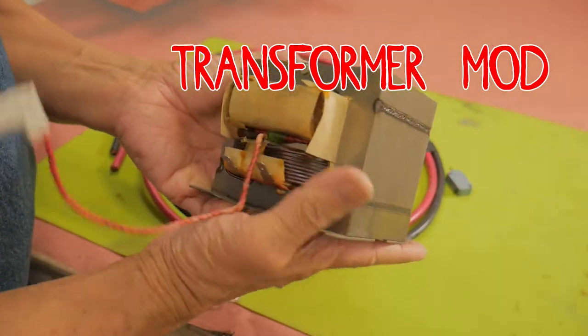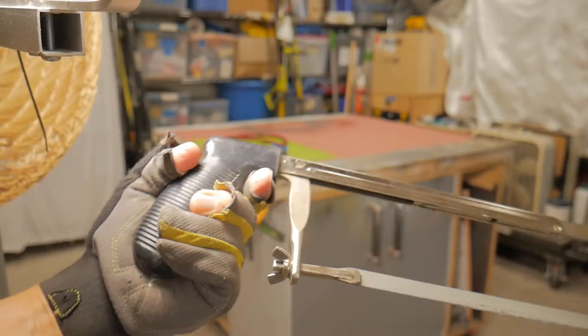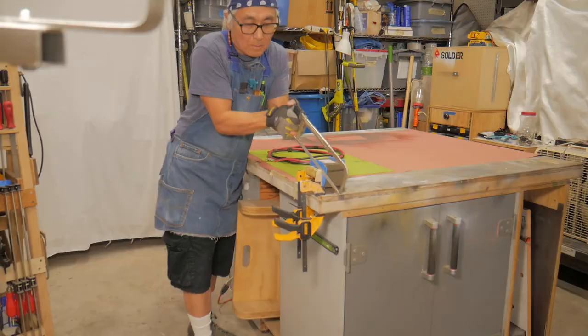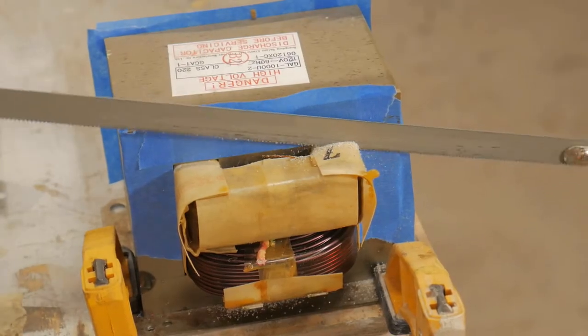This project was inspired by the late Grant Thompson, the king of random. Back in 2012, Grant built a spot welder using a microwave transformer.